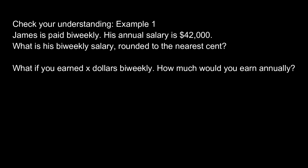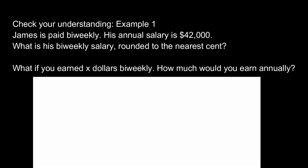Example one: James is paid bi-weekly and his annual salary is $42,000. What is his bi-weekly salary rounded to the nearest cent? Since bi-weekly means 26 paychecks per year, we take $42,000 divided by 26, which gives us $1,615.38. That is how much he earns every other week.